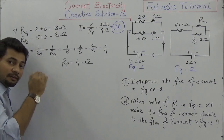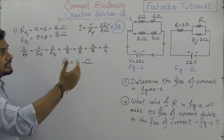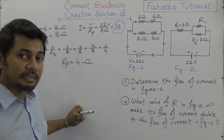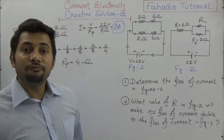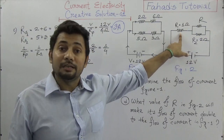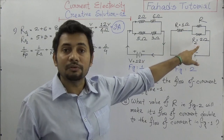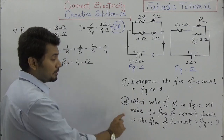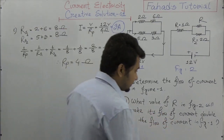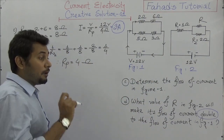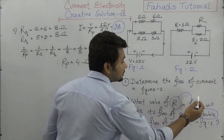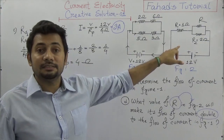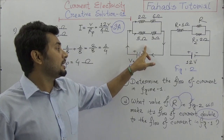This is level one — primary level solutions. Now in figure two, R1 is one ohm, another resistance is two ohms, but the value of R is not given. The question asks: what value of R in figure two will make the flow of current double? Since figure one gives three amperes, the expected current I' in figure two should be three times two, which is six amperes.